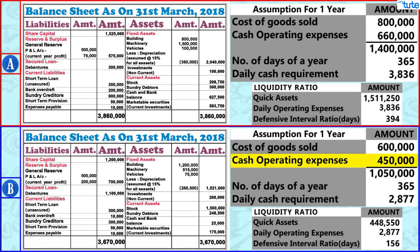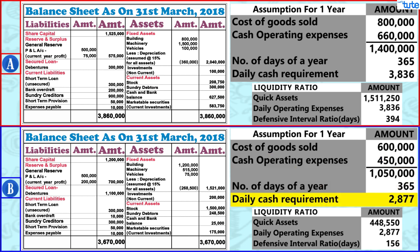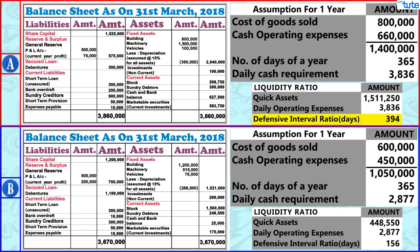Similarly for Company B, assuming cost of goods sold is 6 lakhs and cash operating expenses of 4 lakh 50,000, dividing it by 365 days we get a daily cash requirement of 2,877. The Defensive Interval Ratio is 156 days. So we can notice that Company A can take care of 394 days of cash operating expense obligations, while Company B can take care of 156 days of expenses without having access to non-current assets.